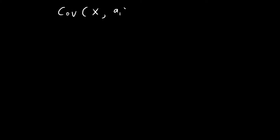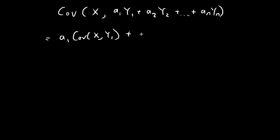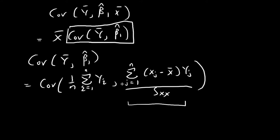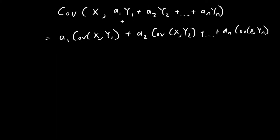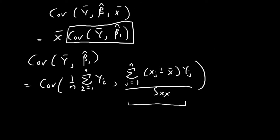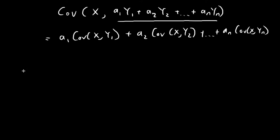To evaluate this covariance, I'll invoke a rule: if you want to find the covariance between a random variable x and an expression like a₁y₁ + a₂y₂ + ..., where all the a terms are constants and all the y terms are random variables, then this equals a₁·Cov(x, y₁) + a₂·Cov(x, y₂) + ... and so on. I'm not going to prove this rule here, but I'll invoke it to simplify our expression. The corresponding aⱼ term is (xⱼ - x̄)/Sxx.